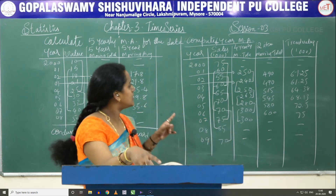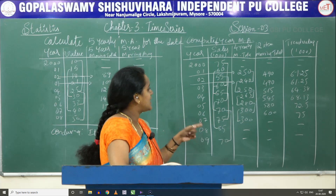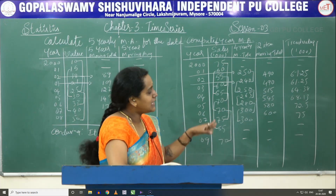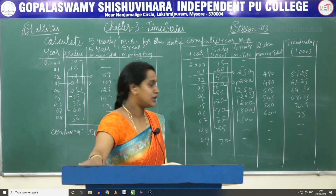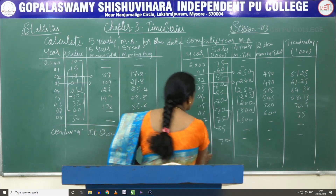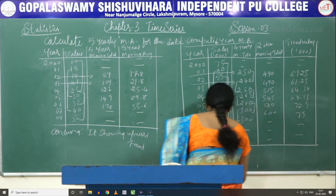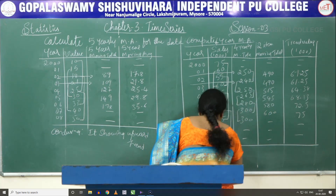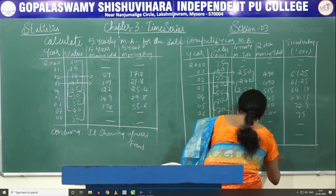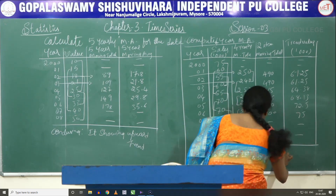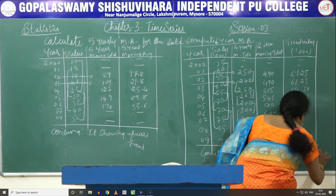The trend values are: 61.25, 61.25, 64, 68, 72, 75 — and again the data is showing an upward trend. Our conclusion is: the given data is showing an upward trend.